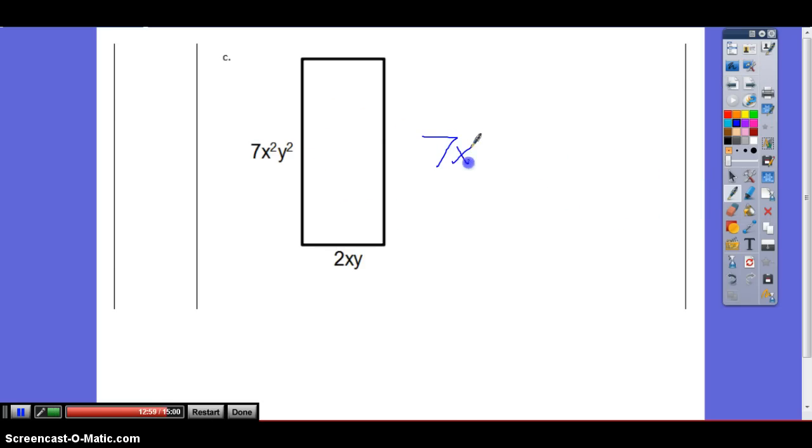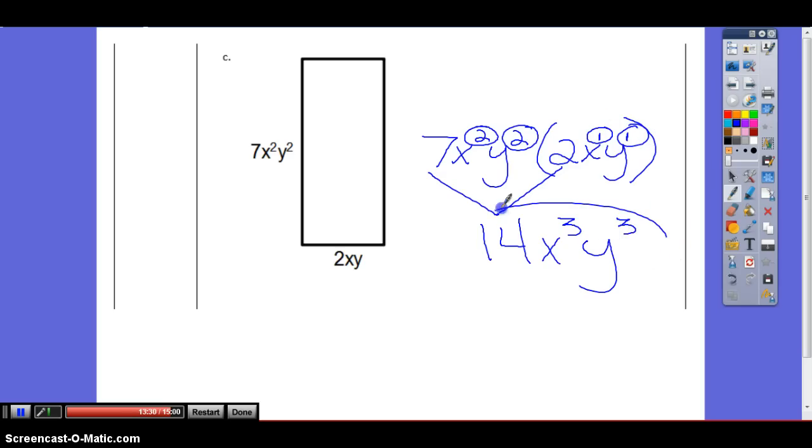Here, 7x squared y squared times 2xy. So what's my coefficient answer? 2 times 7 is 14. How many x's do I have? 2 and 1 which is 3. How many y's do I have? 2 and 1 which is also 3. So 14x cubed y cubed.